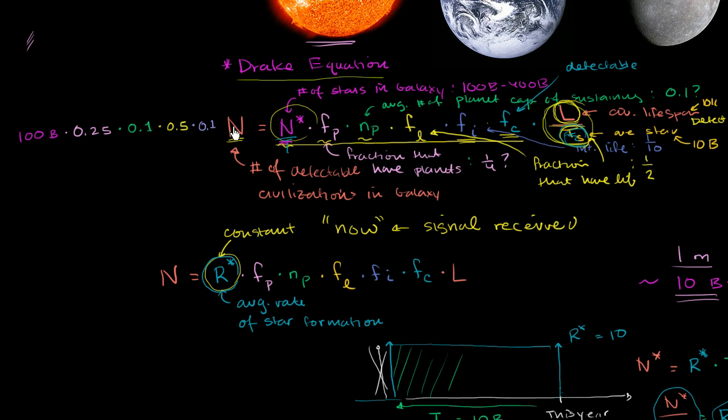And then assuming that intelligent life shows up, what fraction is going to become detectable? I don't know. I don't know whether dolphins will ever communicate via radio or not. So let's just say that that is another 1 in 10 chance, or I'll say 0.1.